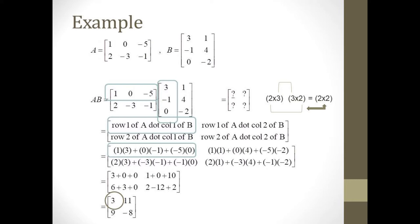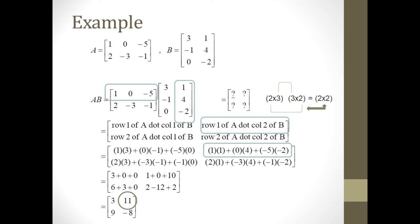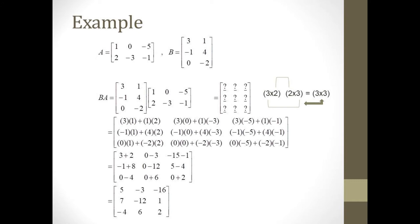The element in row 1, column 1 of our product is the dot product of row 1 from A and column 1 of B: 1 times 3 plus 0 times negative 1 plus negative 5 times 0, which is 3. For row 1, column 2, we take the dot product of row 1 of A with column 2 of B: 1 times 1 plus 0 times 4 plus negative 5 times 2, which equals negative 9. Likewise, we compute row 2 with column 1, and row 2 with column 2. So the result of our matrix product is the 2 by 2 matrix 3, 11, 9, negative 8.